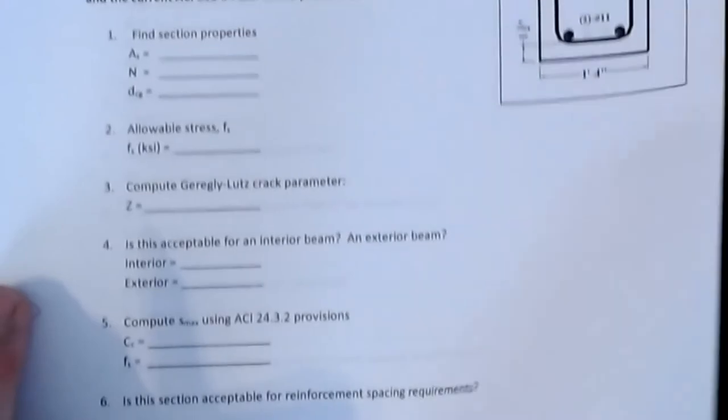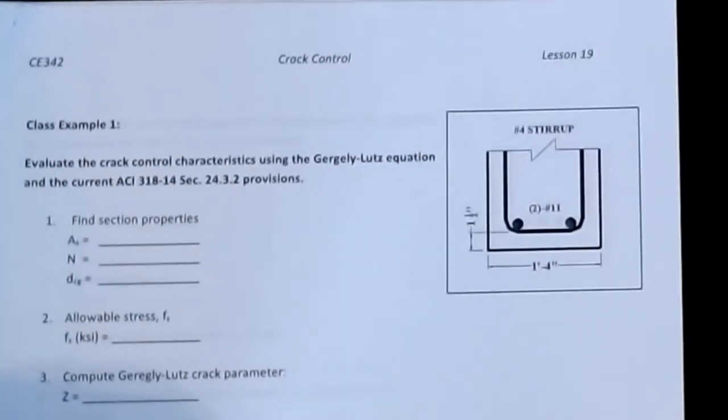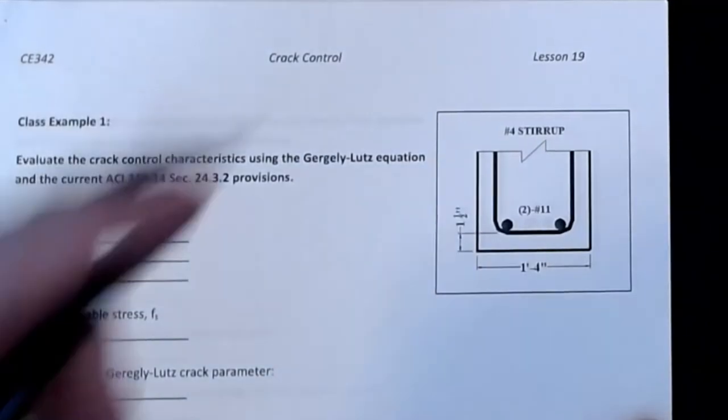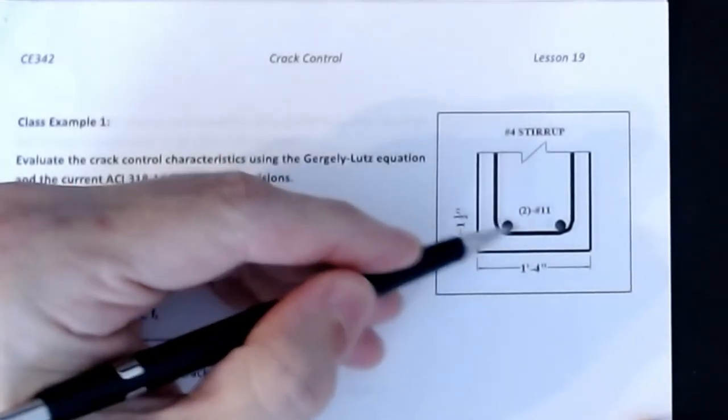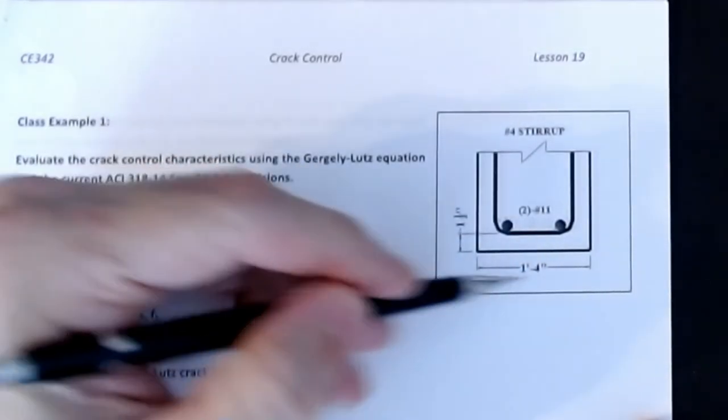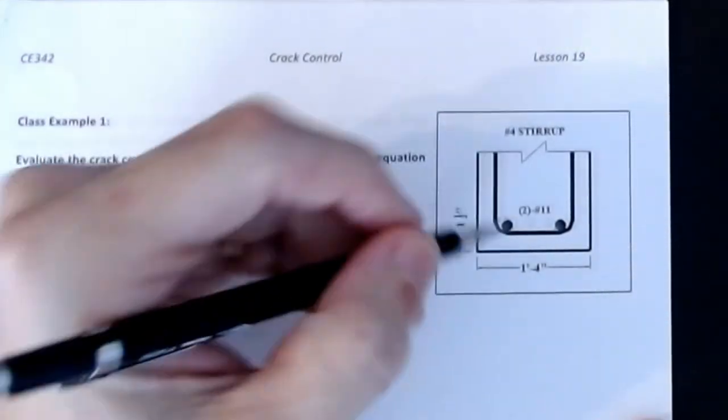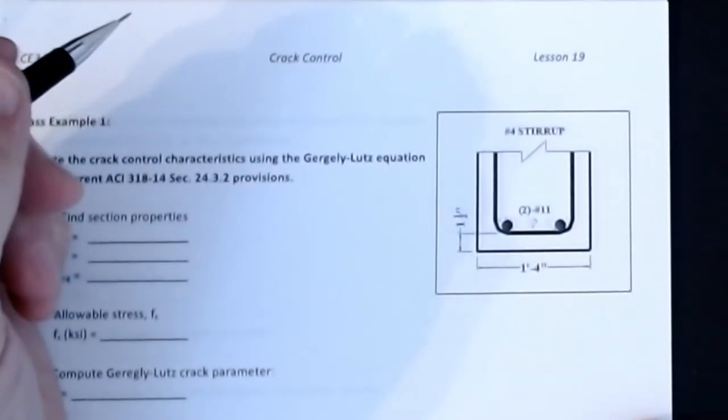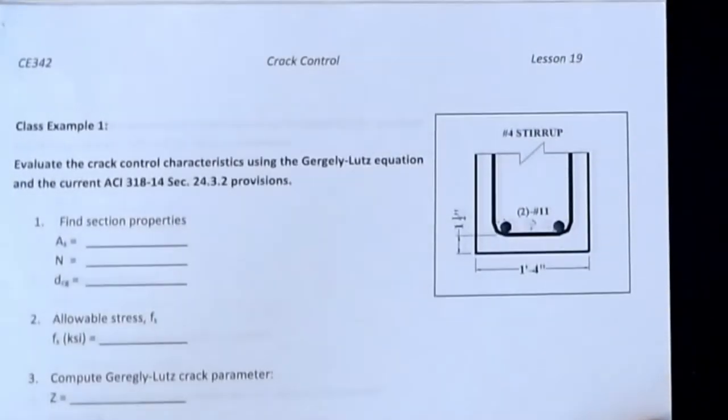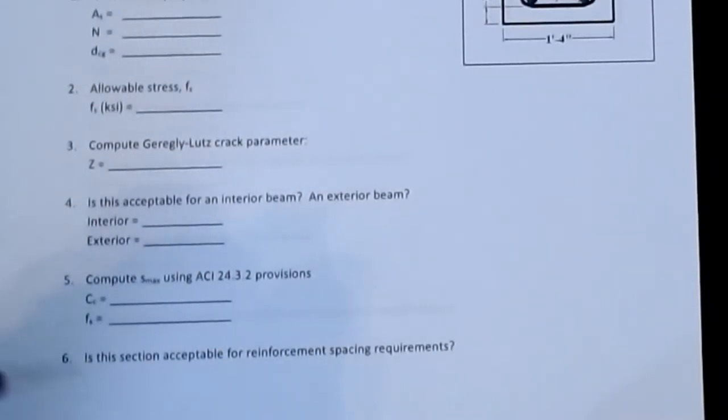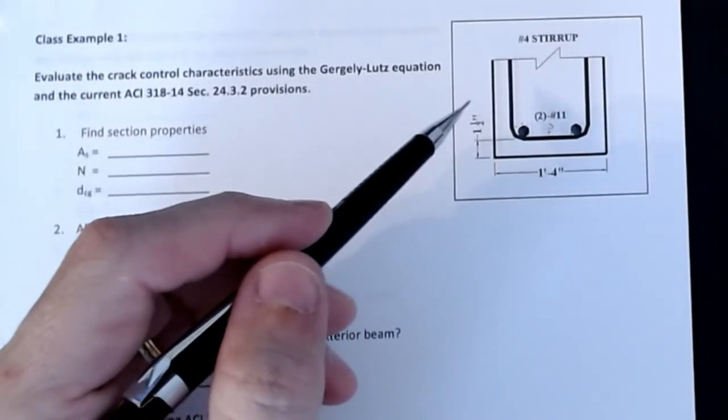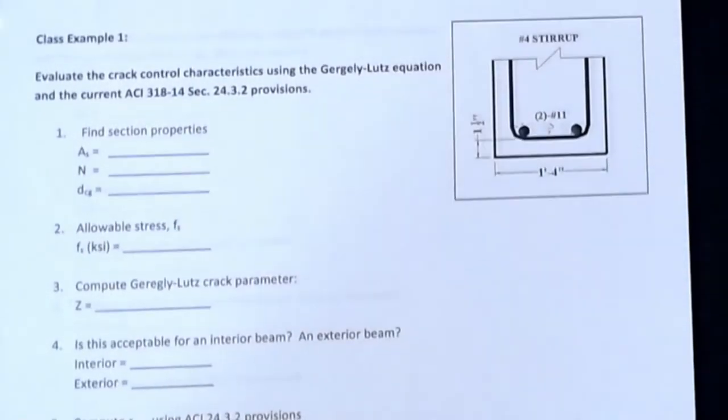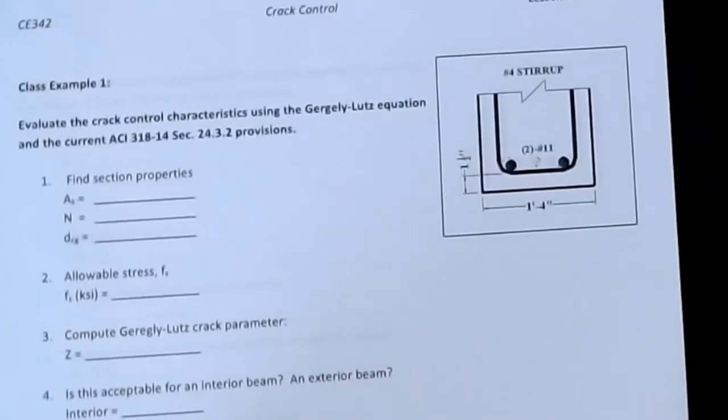You're going to take that Z parameter that you calculate, and you're going to compare it to those limits that we had for interior and exterior as kind of a Z max. If you're less than that number, you're okay, if you're greater than that number, you're not. We want to make sure that we keep smaller Z values are typically better, the cracks don't open up as much. So then we're going to also calculate, compute the S max for these particular dimensions, and then find out, is this section acceptable for those particular requirements. We can kind of figure out, what's my spacing need to be. This is similar to what we did when we were doing the design of SRR beams.